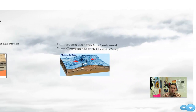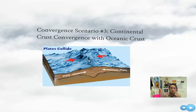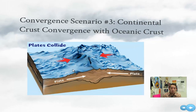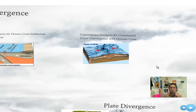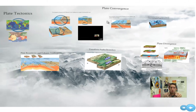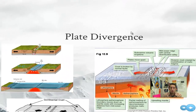Scenario number three: continental crust converging with continental crust. You can see one coming from this direction and one from the other, and as they do so they fold upward — they form a folded mountain range. Similar to the Rockies, the Appalachians, the Alps, the Himalayas. Those are all folded mountain ranges formed when two continental crusts come together. So that covers convergence. Let's move on and talk about divergence.